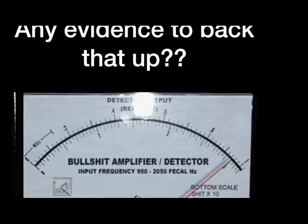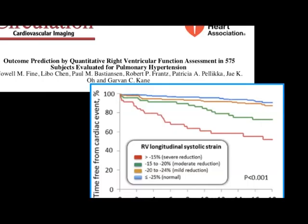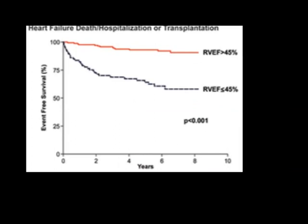Is there evidence that the RV is important? From the pulmonary hypertension literature — one of the largest pulmonary hypertensive trials by Noel Fine, Garvin Kane, and Jo — they showed using strain that the worse your right ventricle is, the worse your prognosis in terms of hospital readmissions and cardiac events. RV strain is really valuable in pulmonary hypertension. In heart failure, if the RV is affected — or if left heart failure is severe enough to transmit pressure to the right side — a down right ventricle is associated with much worse outcomes.